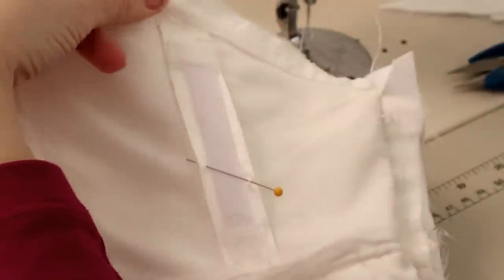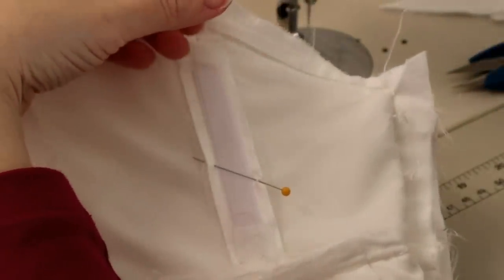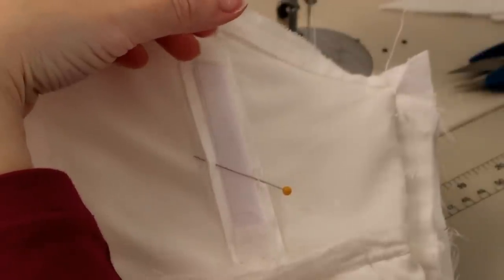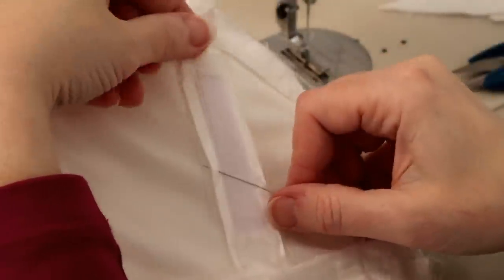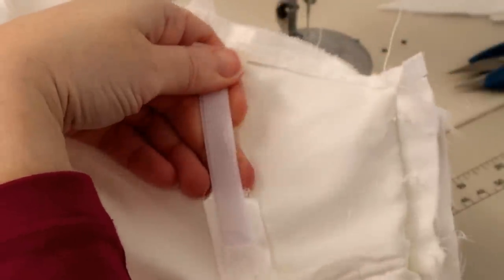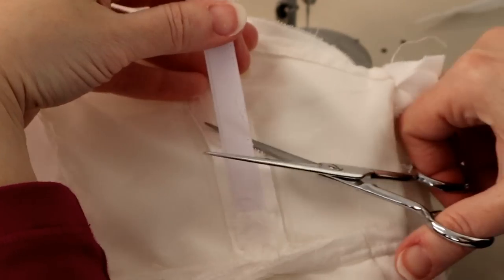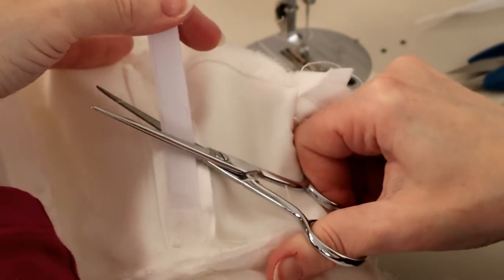Some people use paper templates for this. They'll create a paper template on the first side, use it on the second side. That's great. I'm not knocking that, but this is how I do it. I keep my pieces and I use them as the template. It just kind of saves me a step.